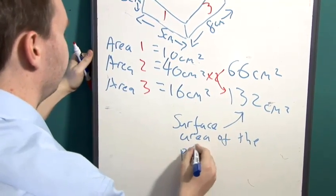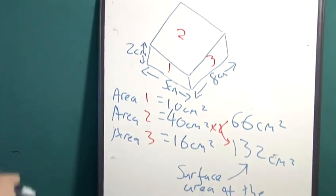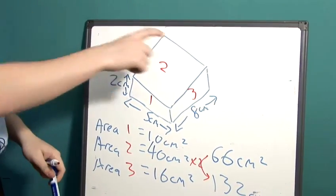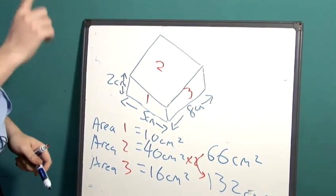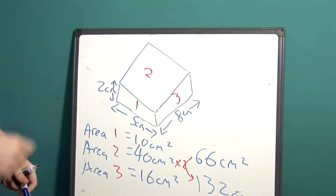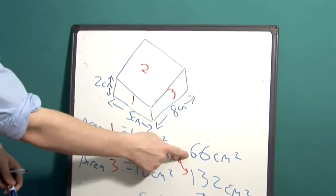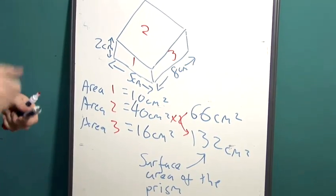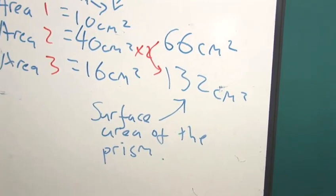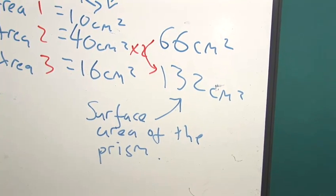Just to recap, to find the total surface area we find the area of each individual face and realise that each face shows itself again once more on the shape. Which means if we add together all these areas and times that by 2 as we have here, that will give us the total surface area of the prism. And that's how we find the total surface area of a rectangular prism.